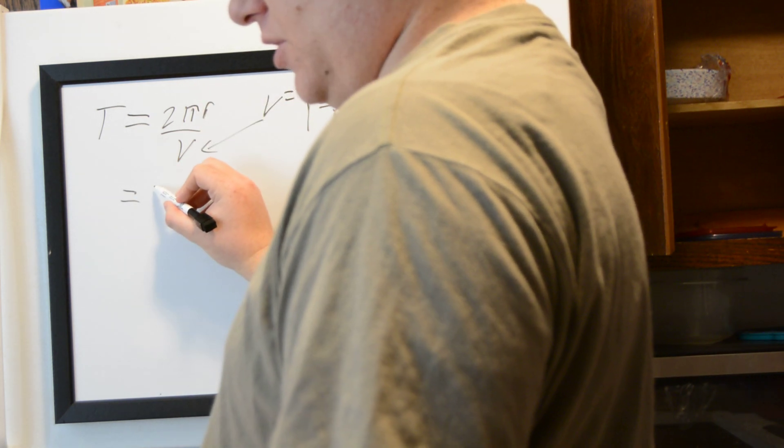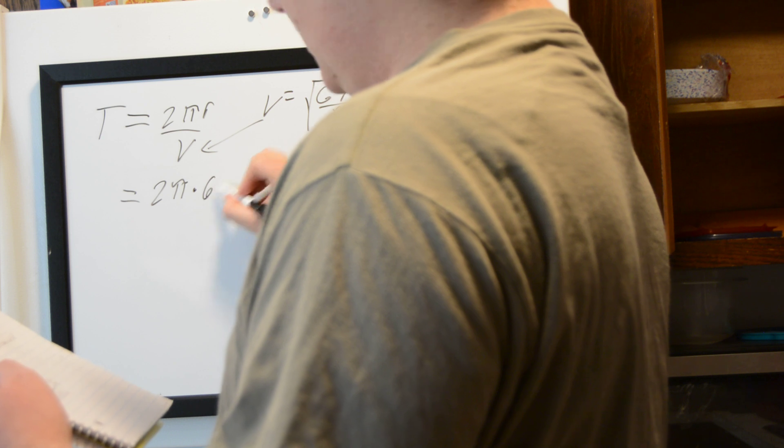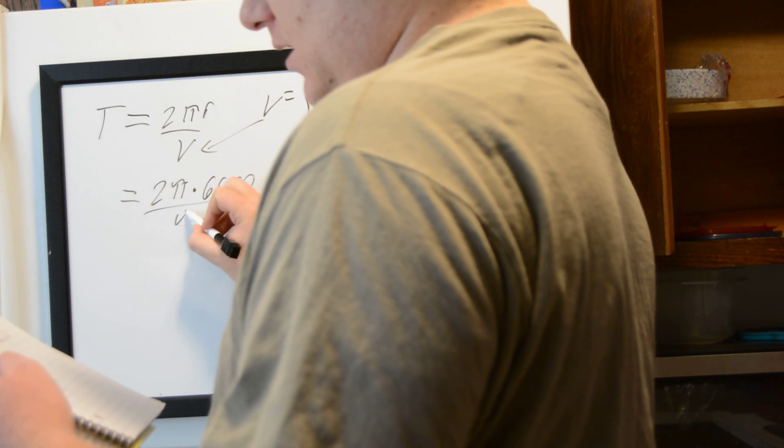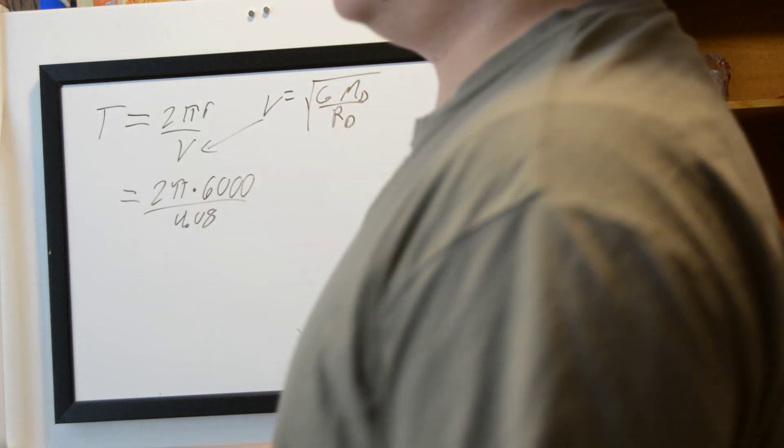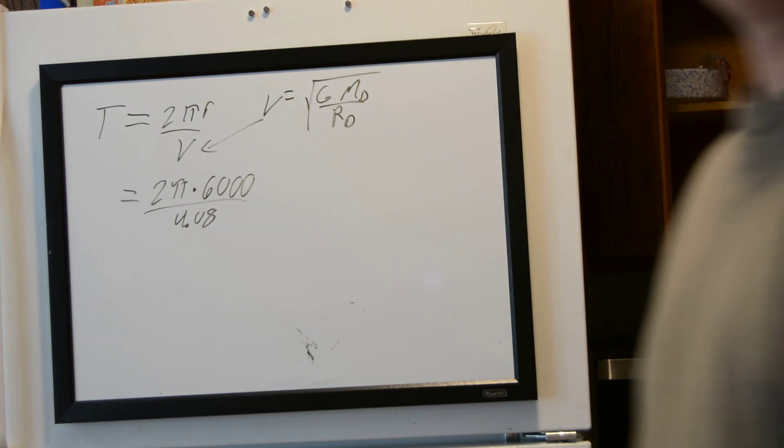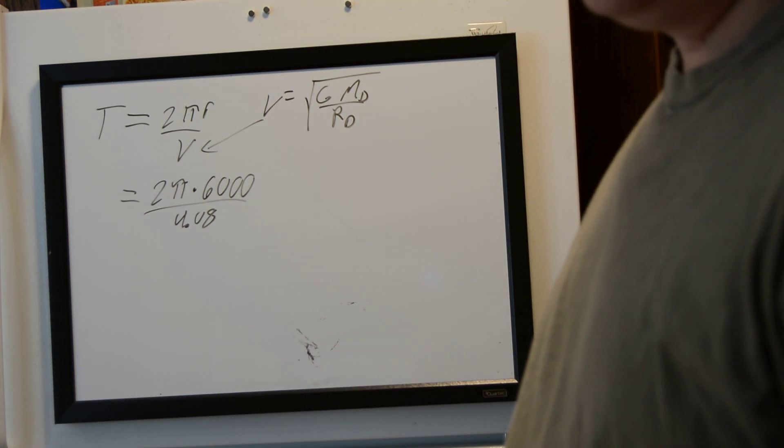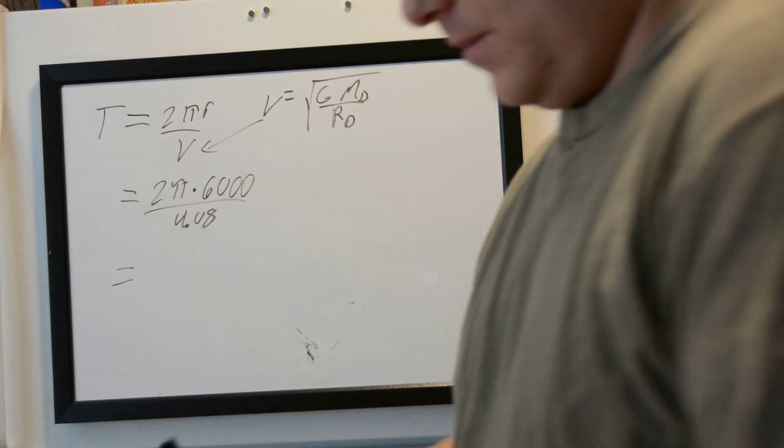And then we get that our period for circular orbit is going to be 2π times our radius, which we remember was 6,000 meters, over our velocity, which is 4.08. And we use the 4.08 here just because it's going to be a little bit more accurate than using our roundup from before. But it shouldn't be off by too much if we use the 4.1.